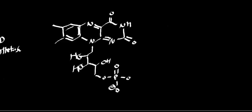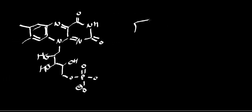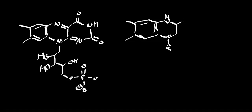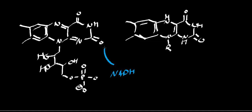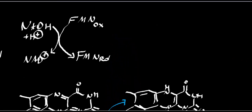Let me also draw the reduced form — I'll just draw the ring and show where the electrons actually go. The NADH is going to transfer its electrons to the flavin ring, and in the process it spits off an NAD+. So within NADH dehydrogenase, the initial electron acceptor is flavin mononucleotide, and flavin mononucleotide gets reduced.